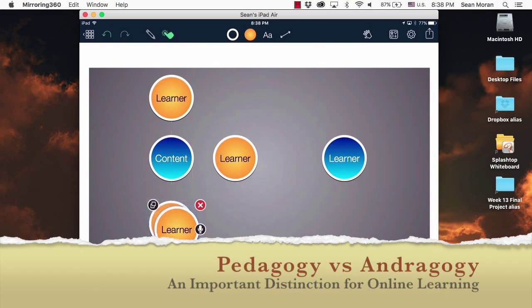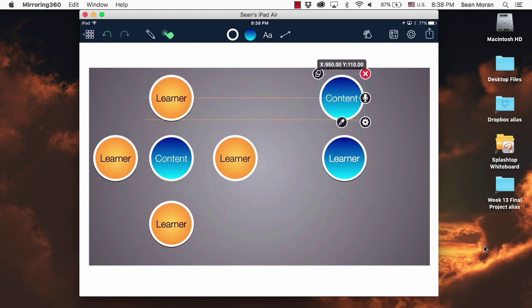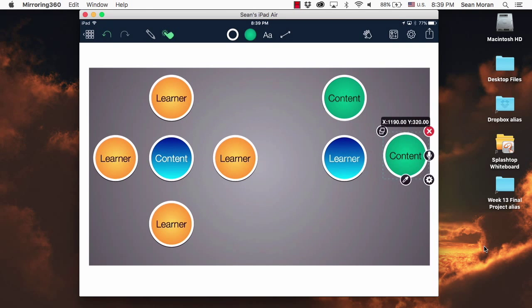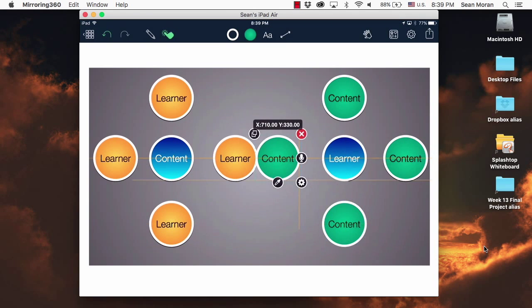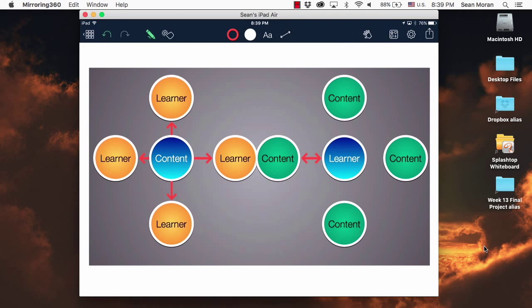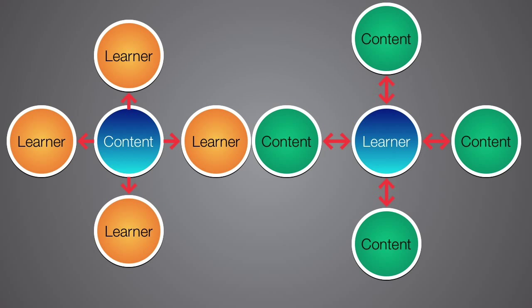There is one important dimension of learning online that I have come to understand. As I have come to understand it, the style of learning that occurs most often online is andragogical. That is, learning that is self-directed. The learner is often responsible for his or her own learning and decides what they will learn and how they will learn it, or how they will engage in their learning.